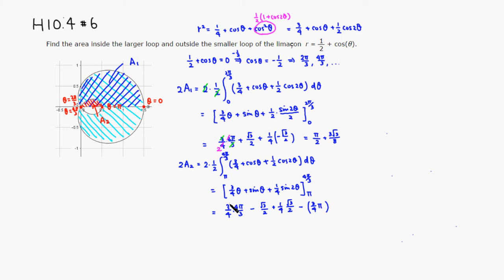The trig terms at the upper limit give −√3/2 + √3/8 = −3√3/8. So 2A2 = π/4 − 3√3/8.